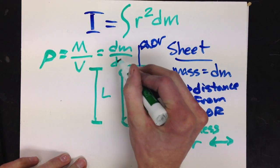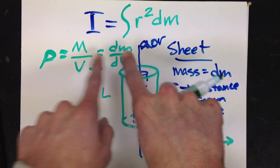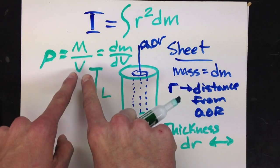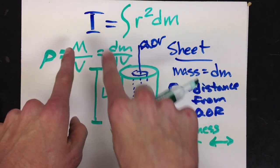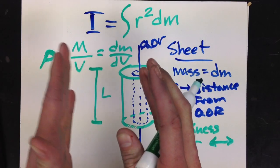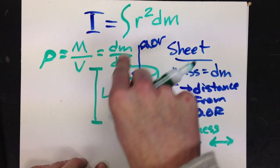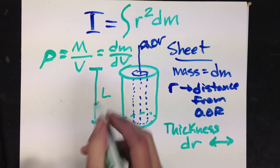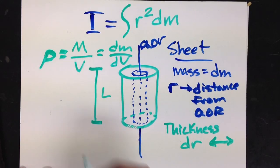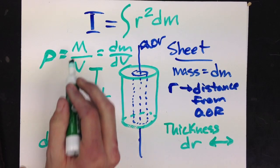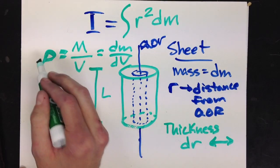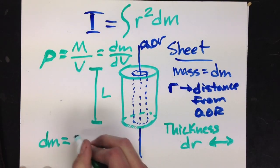its ratio to the volume of my very thin section, I'll call it dv, is the same as total mass over total volume. So this ratio doesn't change, which means I can solve for dm. If I multiply by dv,